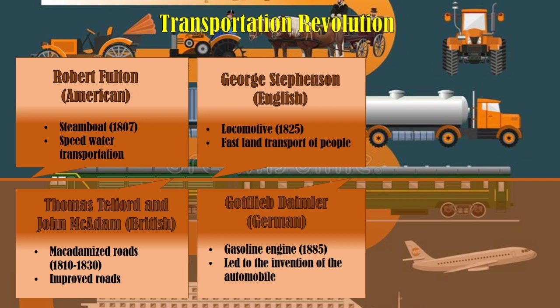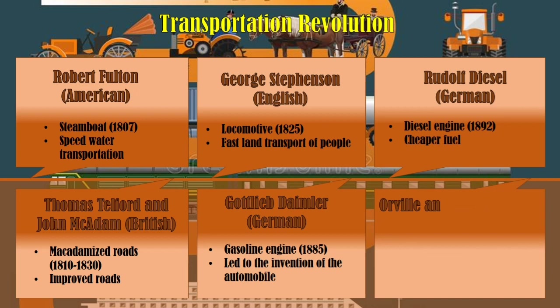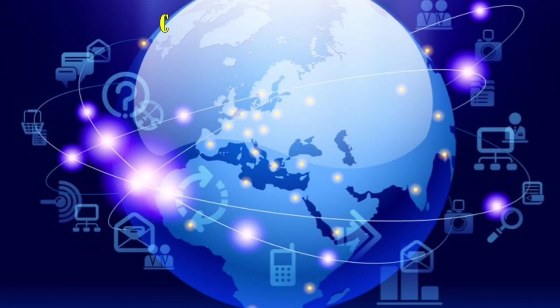And in 1885, a German inventor, Gottlieb Daimler, invented the gasoline engine, which led to the invention of automobiles. Then in 1892, another German inventor, Rudolf Diesel, invented the diesel engine — a cheaper fuel for automobiles. Of course, Orville and Wilbur Wright, Americans, invented the airplane in 1903 as a mode of air transport.